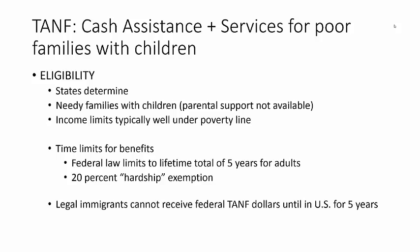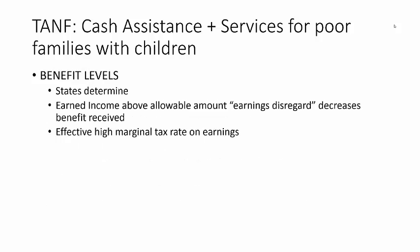Some states, including California, use state funds to provide benefits to legal immigrants who have been here for less than five years. Benefit levels are also set by the states. Generally, states establish a maximum benefit or grant level for a given eligible family size. Benefits are reduced below the maximum level for families that have substantial earned or unearned income.